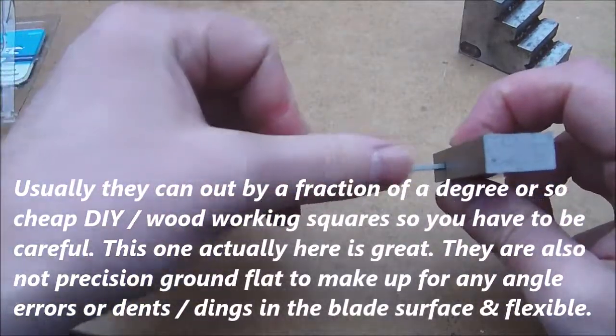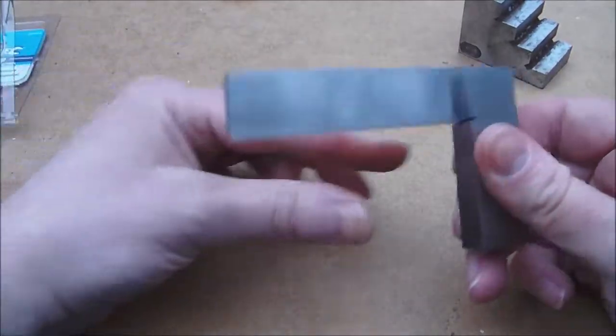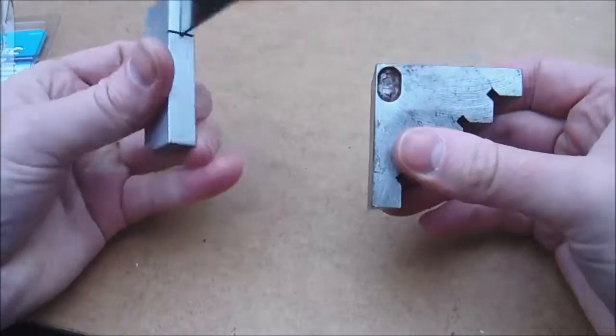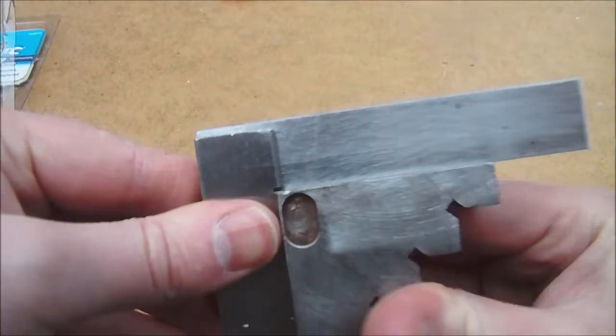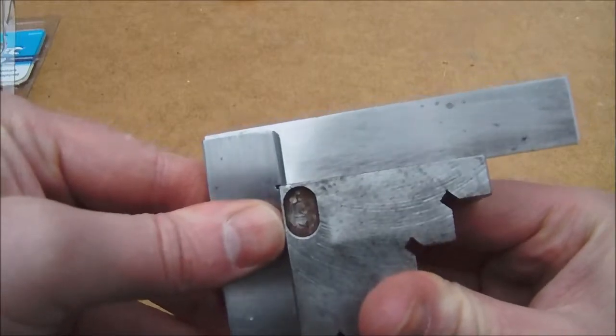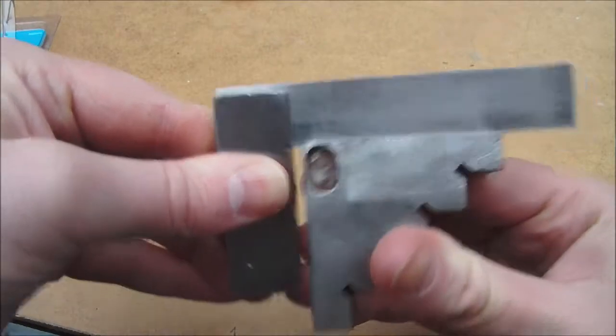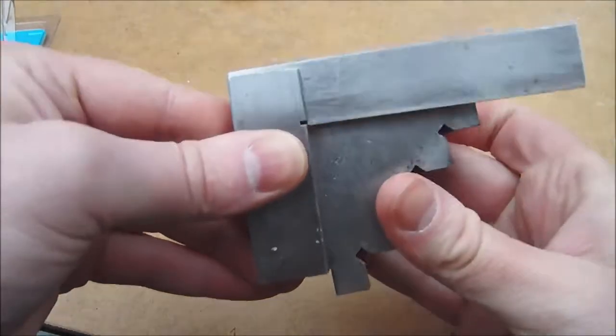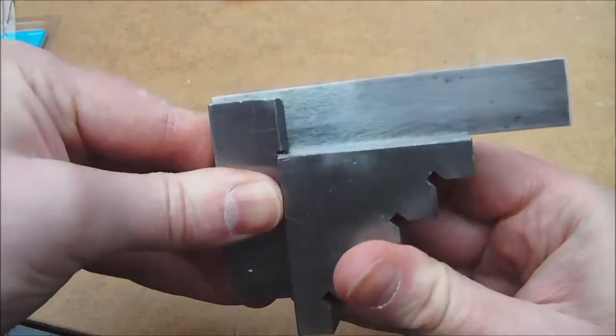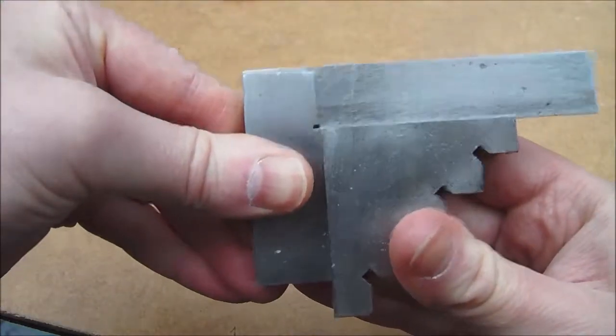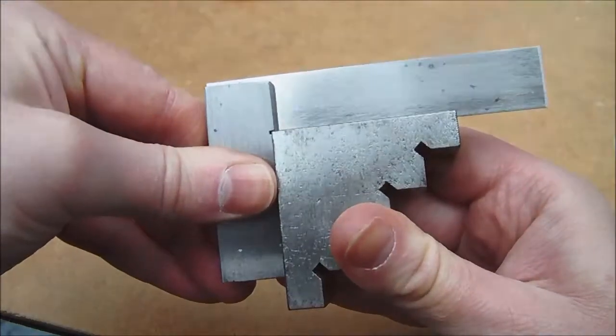Good enough for woodwork and DIY work. Obviously when it comes to engineering, it's a lot thicker on the blade and it doesn't bend at all. It's very stiff and very solid, as it has to be. Again, using this block, holding it right into the handle part, it's bang on square. Holding it up to the light as well, you can see that it's bang on square.